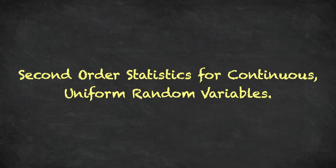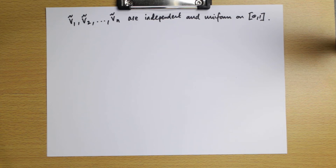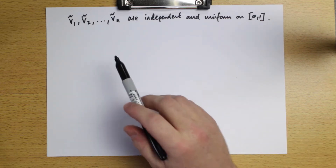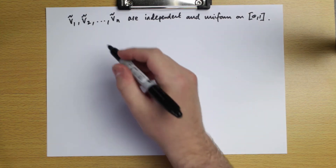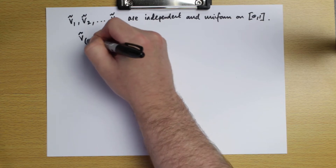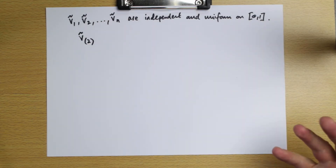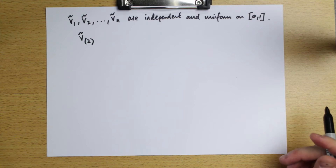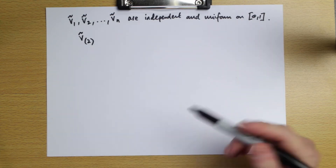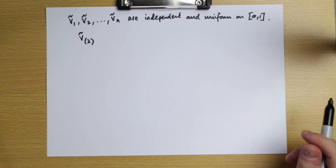Now that we understand how to derive the distribution function and the density function for the first order statistic when we have n independent uniform random variables, let's talk about the second order statistic. We'll call this Ṽ₍₂₎. The second order statistic is the value of the second highest of these n random variables when we take a sample.